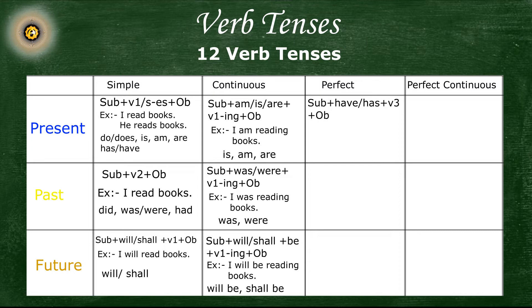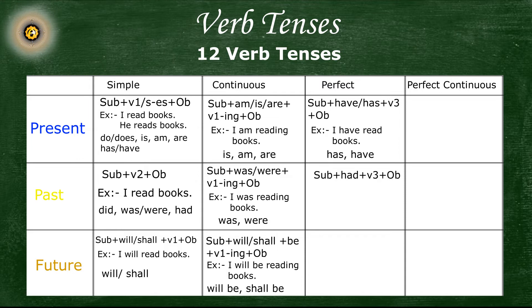Now, perfect tenses — let's talk about present perfect tense first. The sentence structure for this tense is: subject plus have or has plus third form of the verb plus object. The example sentence for this tense is: 'I have read books'.